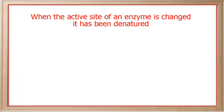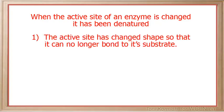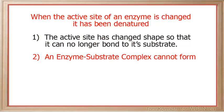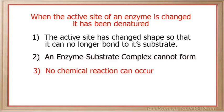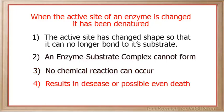It is important to understand that when the active site of an enzyme is changed, it is said to have been denatured, and there are always a number of points to consider. First, the active site has changed shape to the extent that it can no longer bond to its substrate. Second, because it can no longer bond to its substrate, an enzyme-substrate complex cannot form. Third, because the enzyme-substrate complex cannot form, no chemical reaction can occur. And finally, the consequence can be devastating to the organism, resulting in disease or possibly even death.